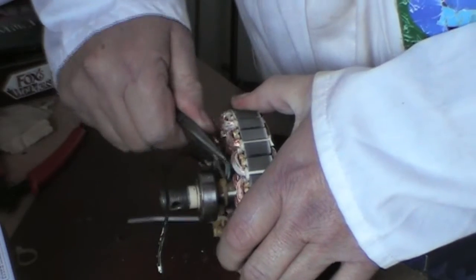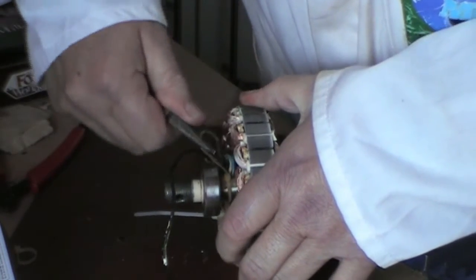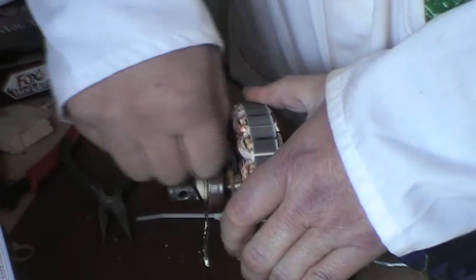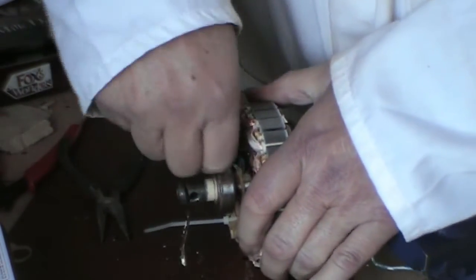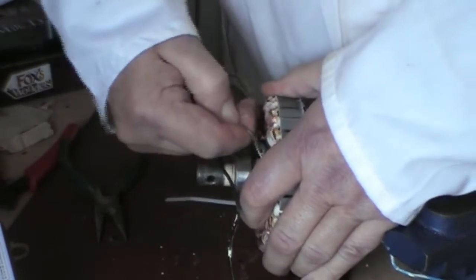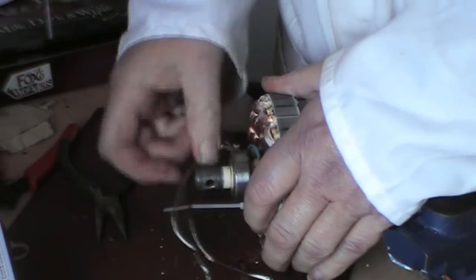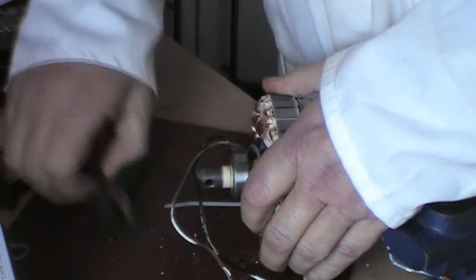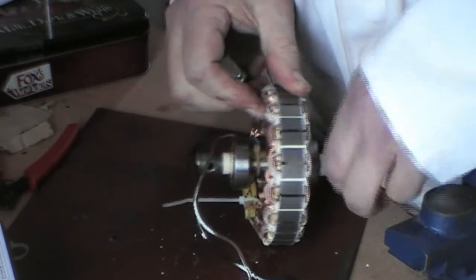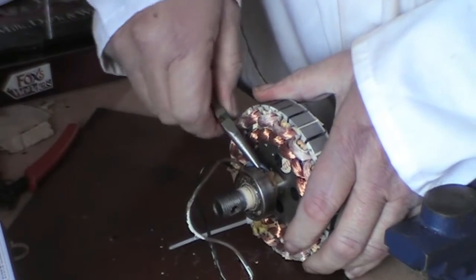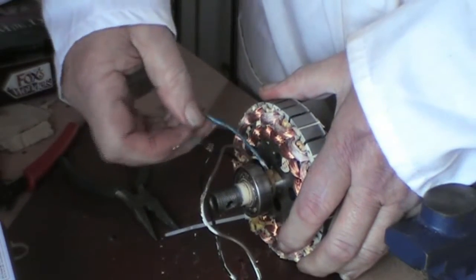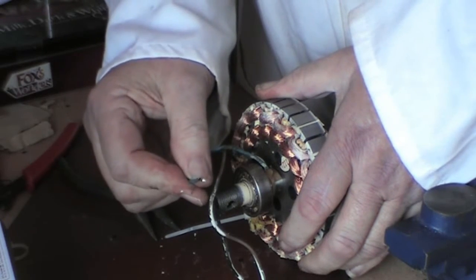You can put the heat shrink over the top, so it's not a complete disaster. The blue one, that's nice and loose, so there's the white one.